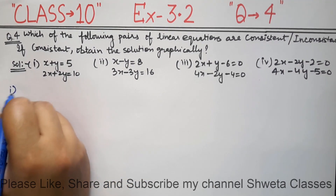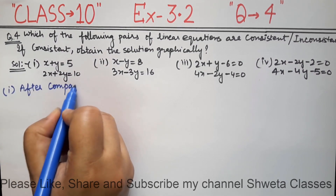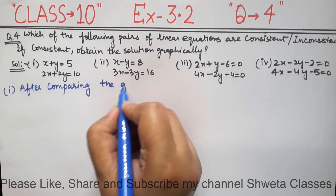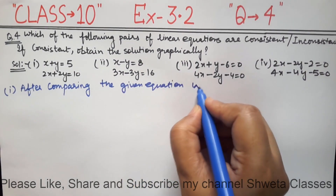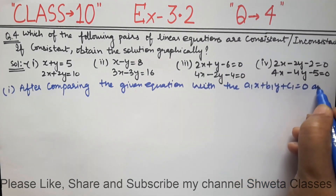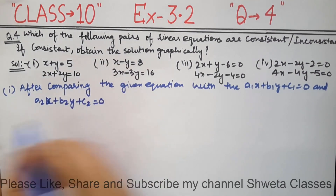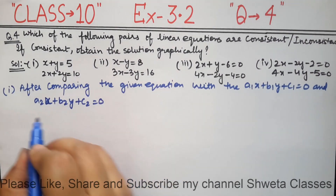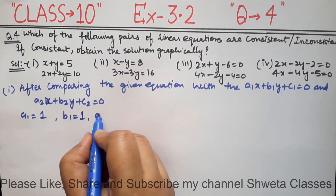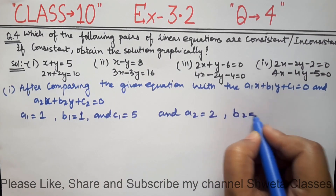We will start with Part 1. After comparing the given equations with the standard form a1x + b1y + c1 = 0 and a2x + b2y + c2 = 0, we find: a1 = 1, b1 = 1, c1 = -5, and a2 = 2, b2 = 2, c2 = -10. So a1/a2 = 1/2, b1/b2 = 1/2, and c1/c2 = -5/-10 = 1/2.